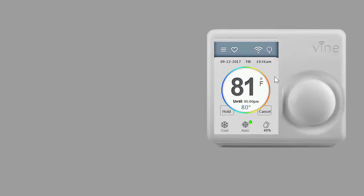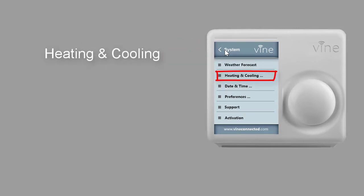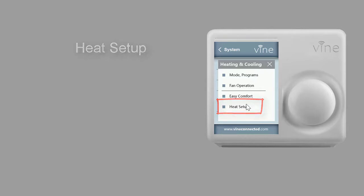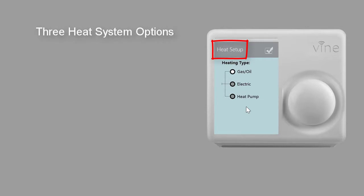The first step is to click on the system menu, then select heating and cooling. Next you click on heat setup at the very bottom, and that will take you to the heat setup screen where you can choose between three different heating systems.